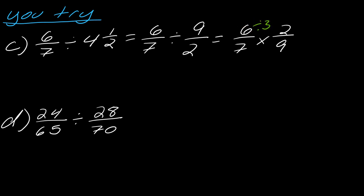So, I'll divide this by 3, and I'll divide this by 3. And, so, this will be 2 over 7 times 2 over 3. So, this will equal 4 over 21.